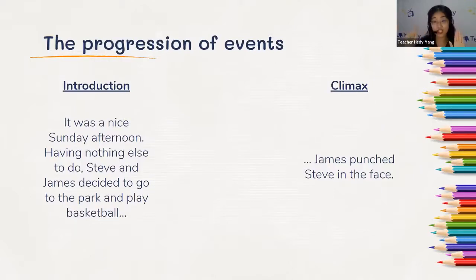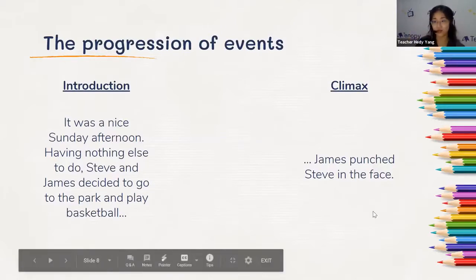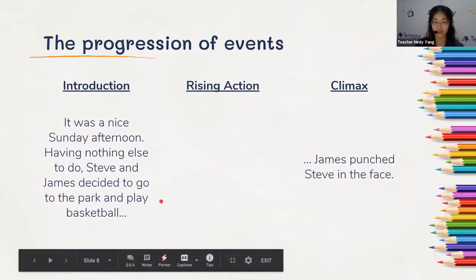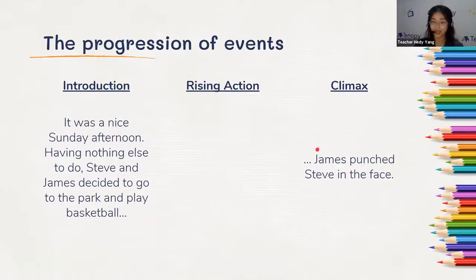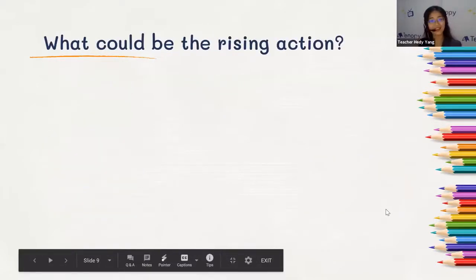In that story, there is a climax — they got into a fight and James punched Steve in the face. But between the introduction and the climax, what are we missing? What is the second part of your plot mountain between the introduction and the climax? Rachel says 'problem' — the problem is at its most intense in the climax. But how do we reach the climax? How did the problem evolve? That part in your composition is called the rising action.